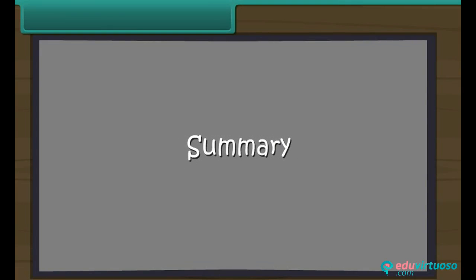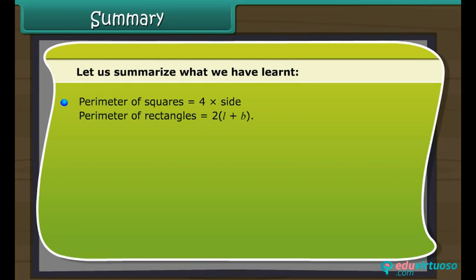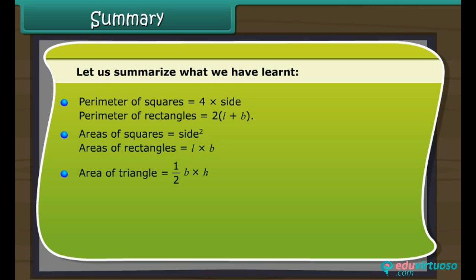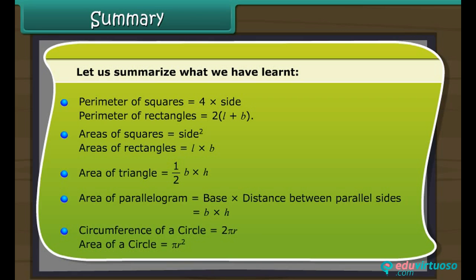Summary. Let us summarize what we have learned: perimeter of squares and rectangles, areas of squares and rectangles, area of a triangle, area of a parallelogram, circumference and area of a circle, and unit conversions.